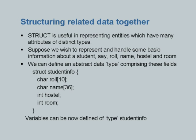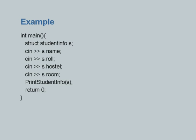This facility tells us that these four components are defined to be part of a new data type called student_info. Just as you can say float x or int y, similarly you can say student_info s. So struct student_info becomes a new data type. Here is a declaration: s is the name of a variable of the type structure whose components are defined in student_info.